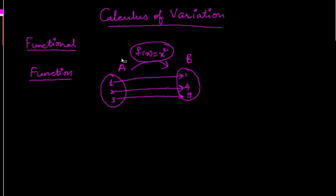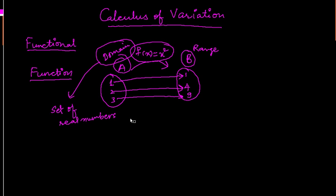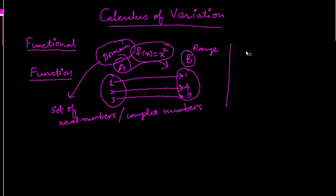In case of a function, this is called the domain, and this is called the range. We can see that in case of a function, this domain is a set of real numbers — it can also be a set of complex numbers depending upon the situation. So, in case of a function, the domain is the set of numbers. And in case of functionals, functionals are functions whose domain is a set of functions.